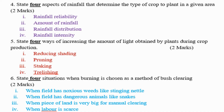Farmers use burning instead of any other method: Number 1: when the field has noxious weeds like stinging nettles. Number 2: when the field has dangerous animals like snakes. Number 3: when the piece of land is very big for manual clearing. Number 4: when labor is scarce — when there are no people to do physical clearing.